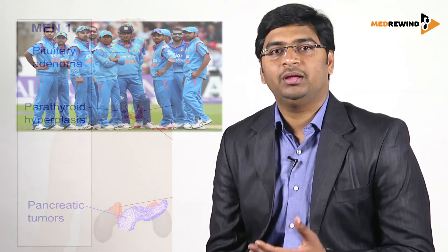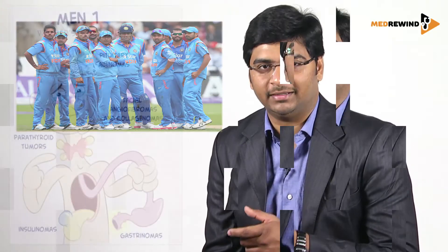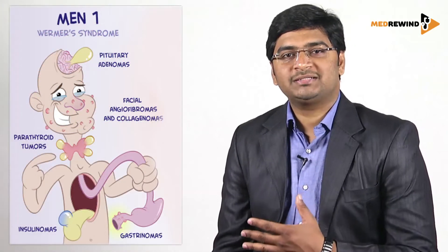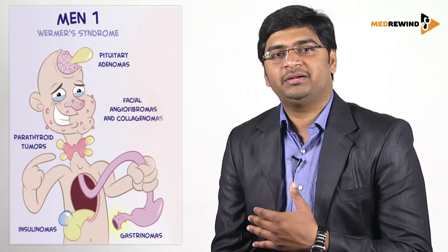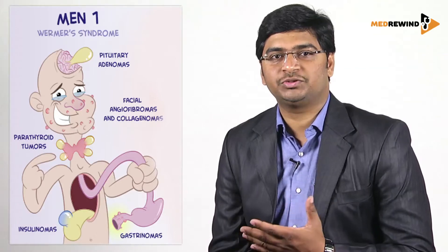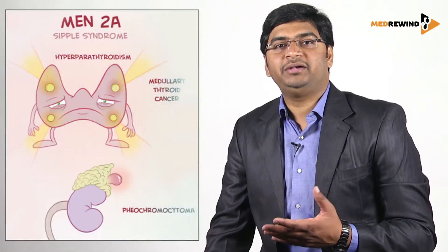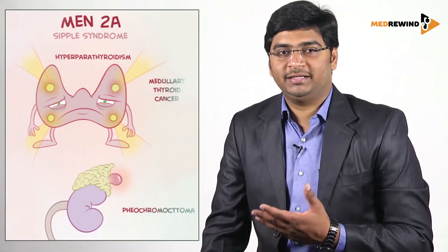For MEN 1, 'men in blue,' the gene is menin — M-E-N-I-N. The components can be remembered in a simple way: MEN 1 constitutes three P's — that is pituitary, parathyroid, and pancreatic hyperplasia.